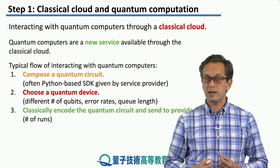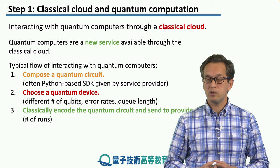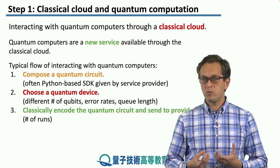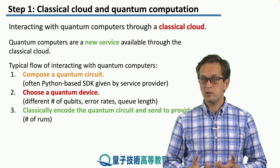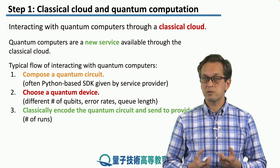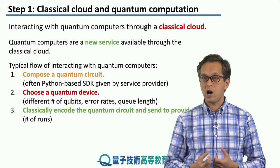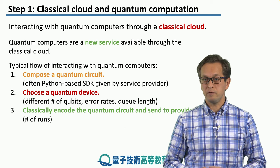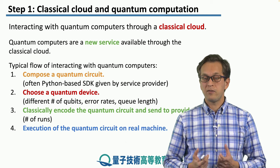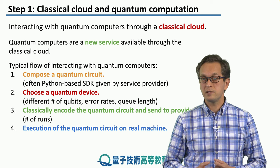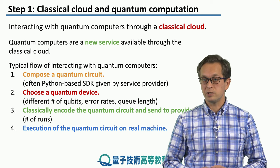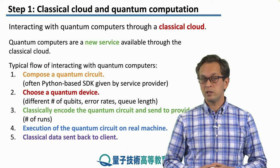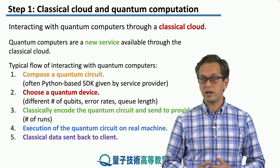Number three, we classically encode the quantum circuit and then we send it to the provider. Also, we don't want to run this only once — typically we have to run it a number of times, so we specify to the provider how many times the quantum circuit should be executed on their device. Finally, the provider executes our quantum circuit on the real machine, and the generated classical data is sent back to us.